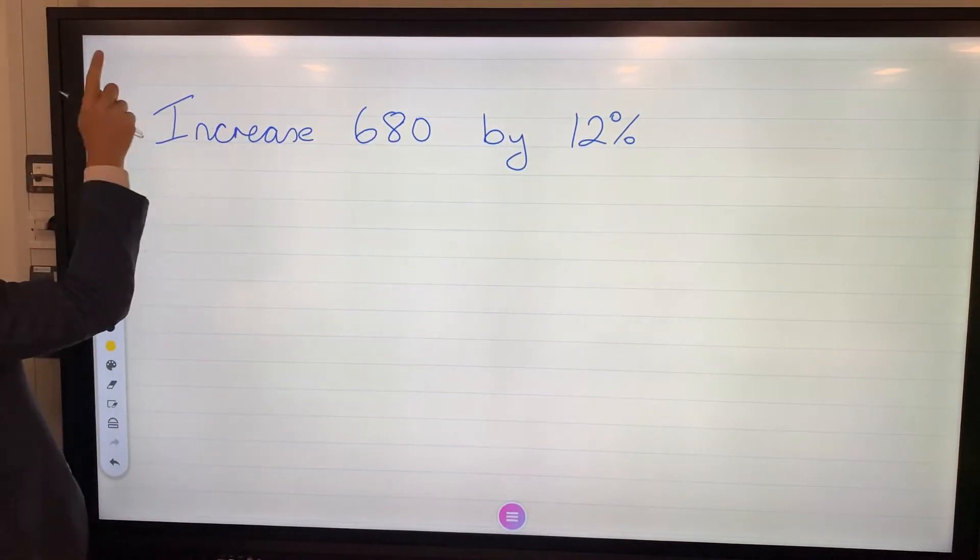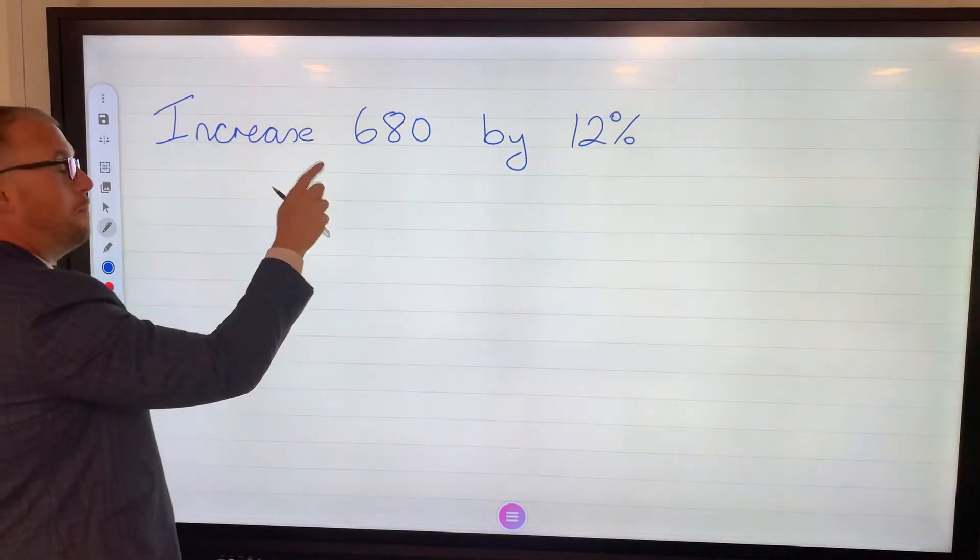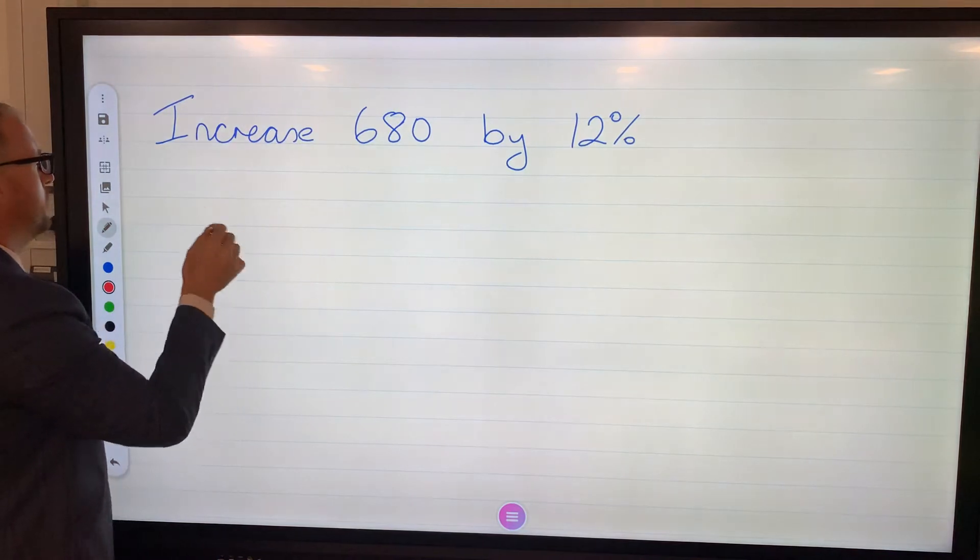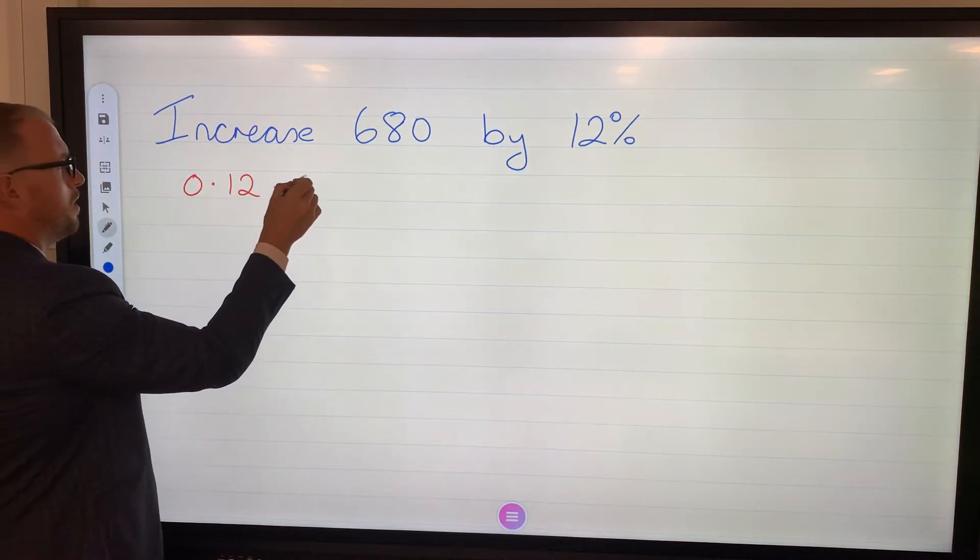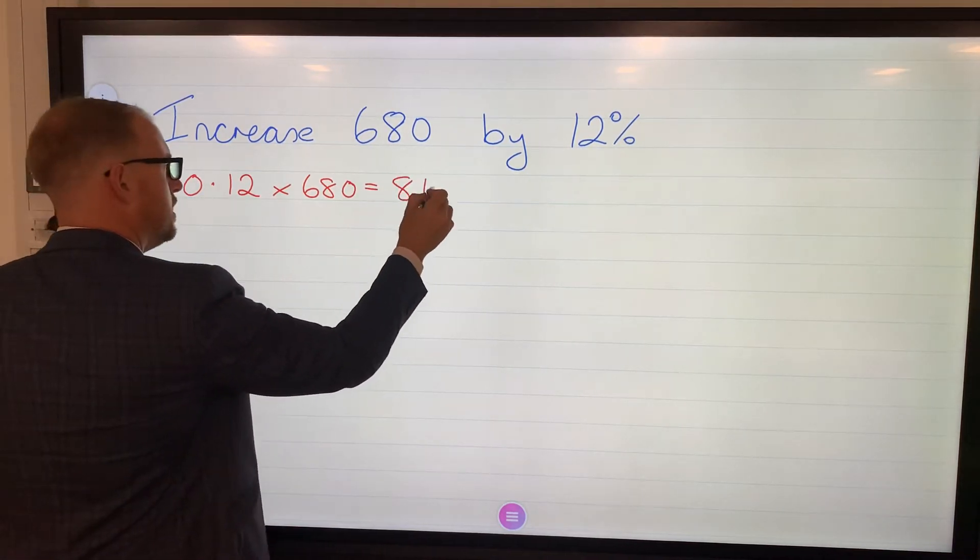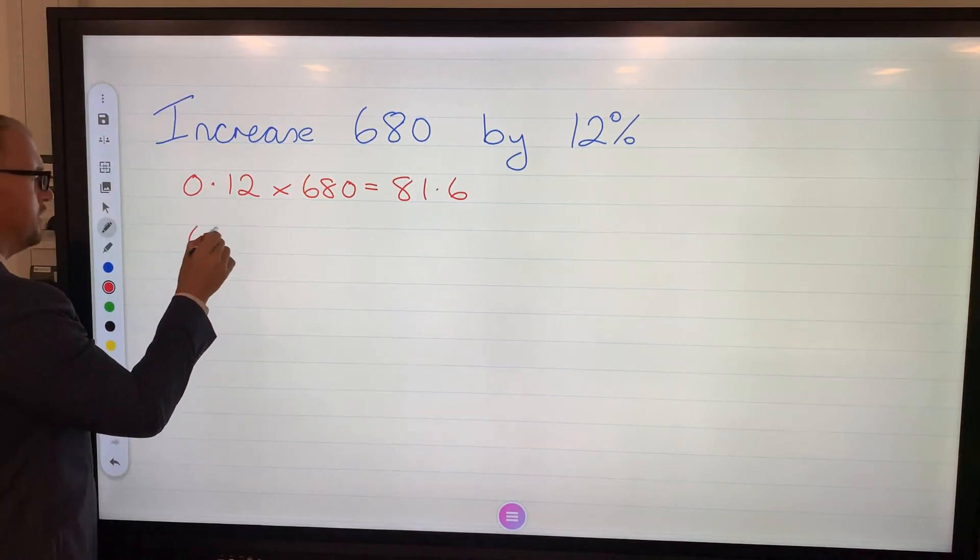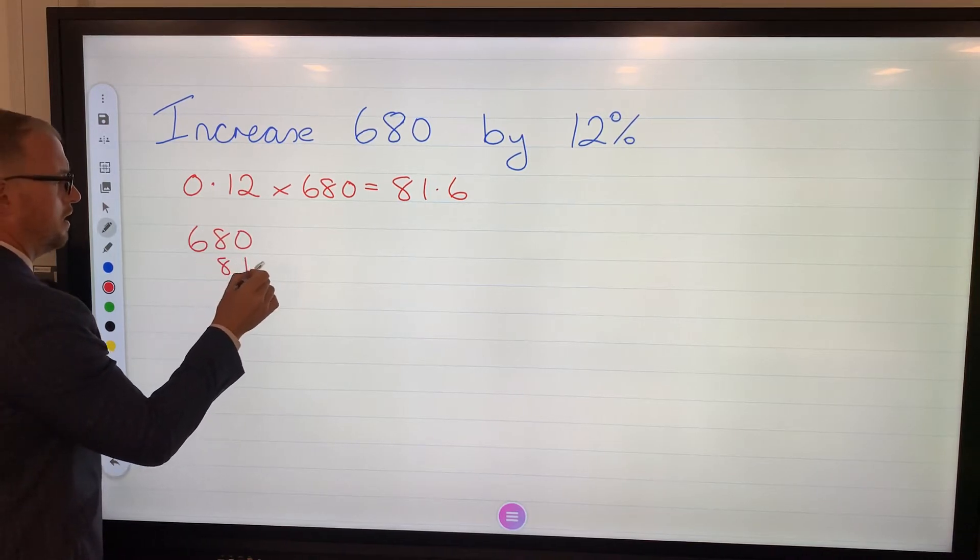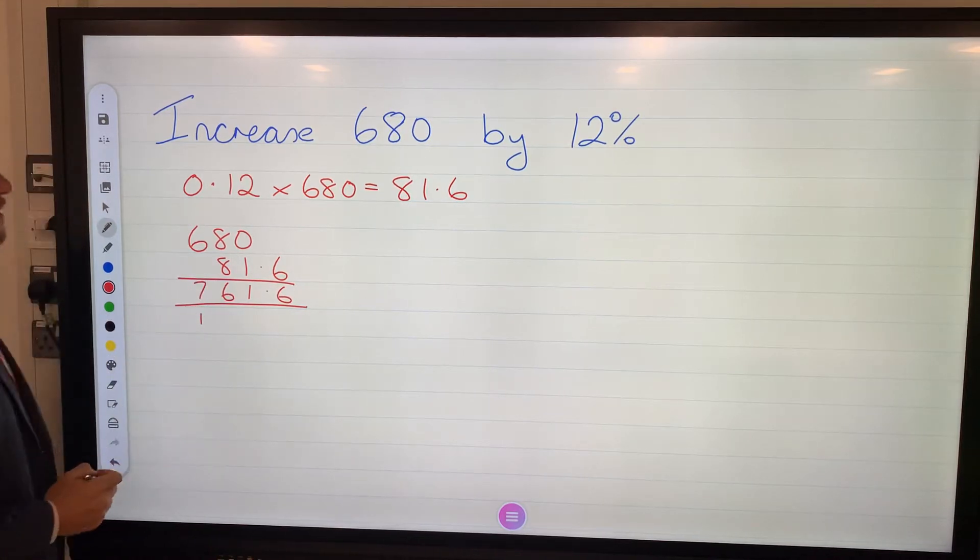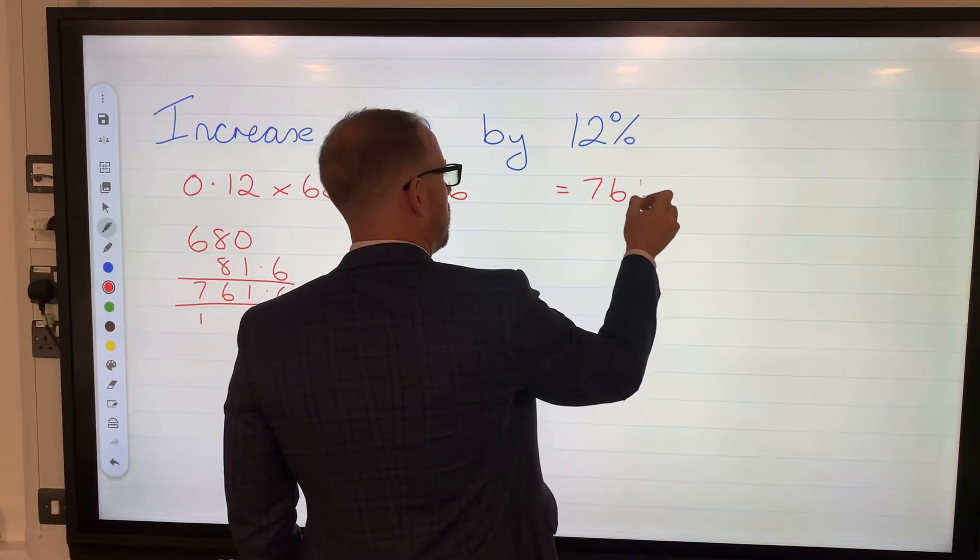Increase 680. Could be pounds, could be kilograms, could be anything. Increase 680 by 12 percent. Now if you're going to increase, then this means the 680 is going to get bigger by 12 percent. So some of you might be thinking, oh I could just find 12 percent then add it on. Well you could do that. We could do 0.12 multiplied by 680 and that would give us 81.6. We could do that and then add it on to the 680, and if we did that we would have 761.6. Now that is the correct answer, 761.6.